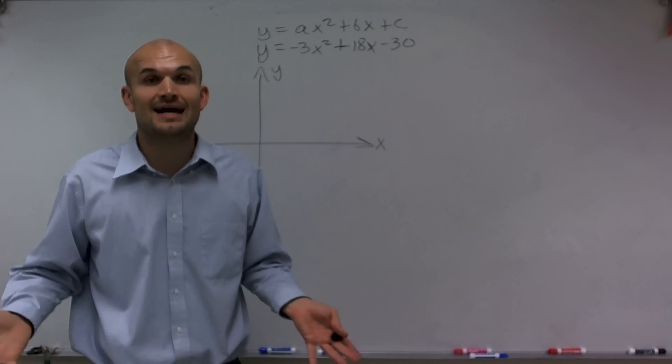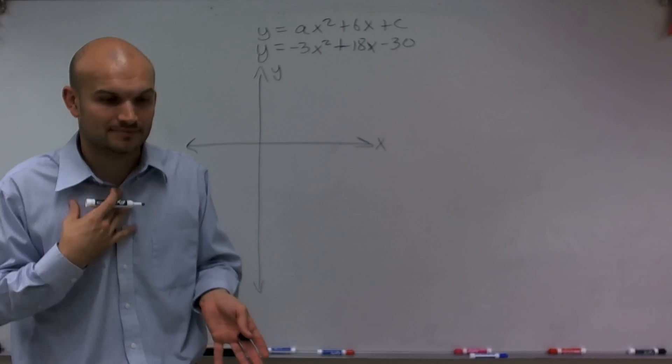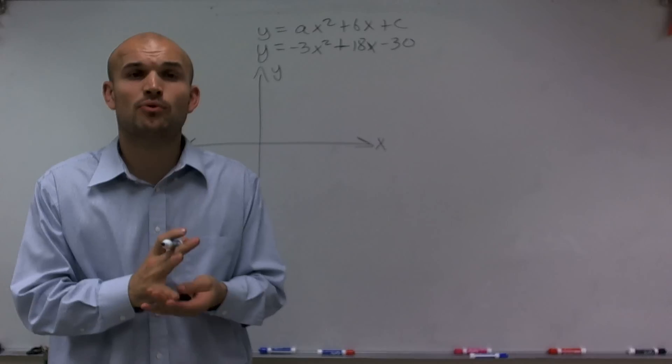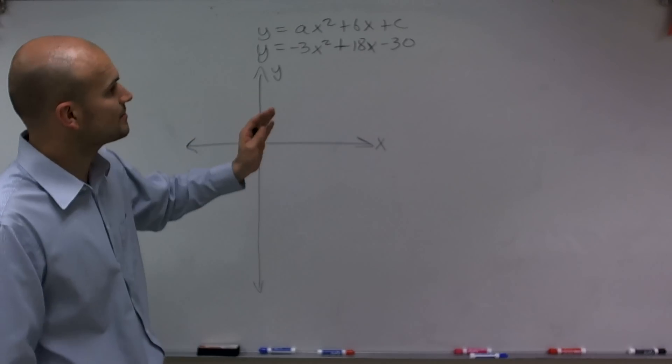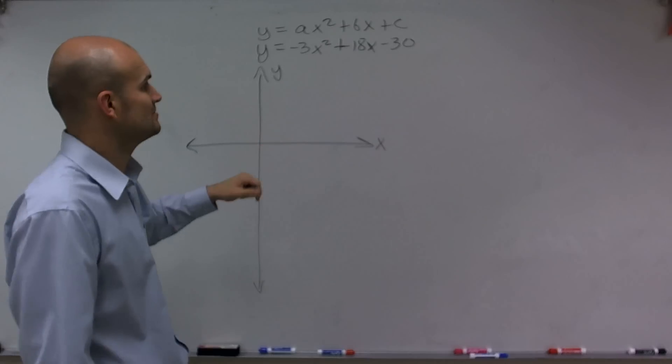So remember, with all quadratics, we can find the line of symmetry. When graphing a quadratic, that's one of the most important pieces of information that we want to determine. So the first thing I'm going to do is determine what is my line of symmetry.